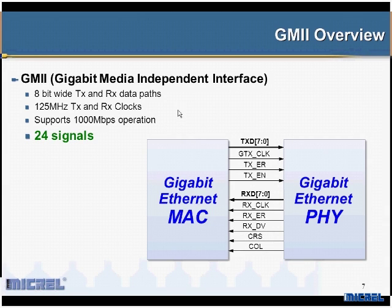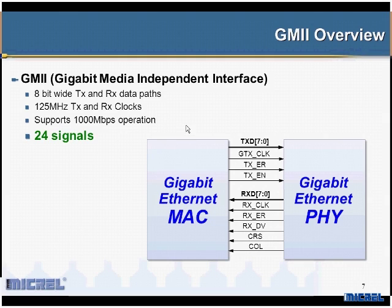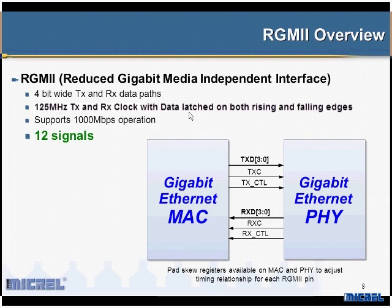Now let's talk about gigabit Ethernet. In gigabit Ethernet the interface gets quite a bit wider. The GMII interface — gigabit media independent interface — is 8 bits of transmit, 8 bits of receive, a transmit clock and a receive clock, so we're up to 24 signals to hook a gigabit PHY to a gigabit MAC. There's another gigabit interface called RGMII, reduced gigabit media independent interface, which is 4 bits transmit, 4 bits receive, and still has 2 clocks.